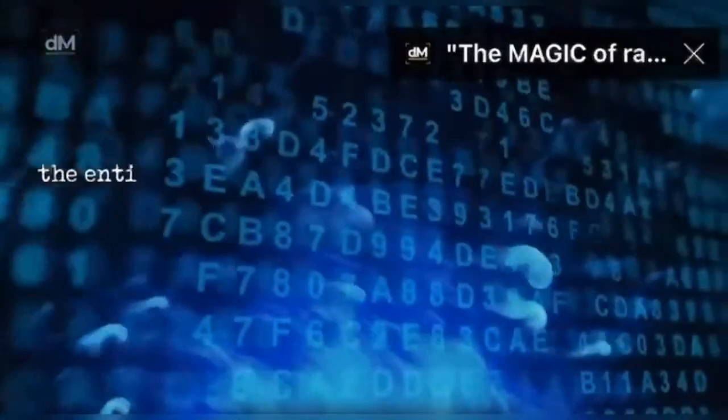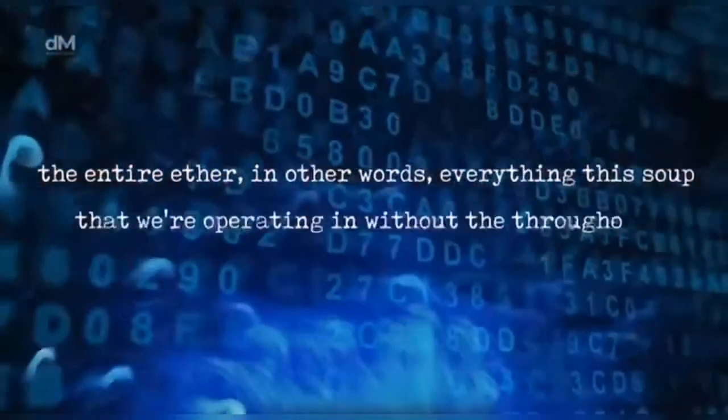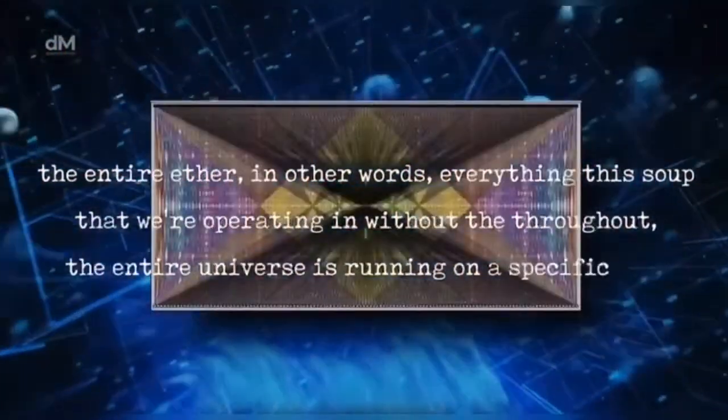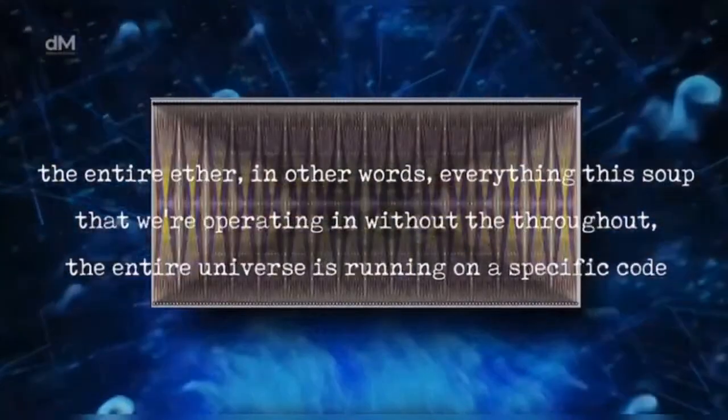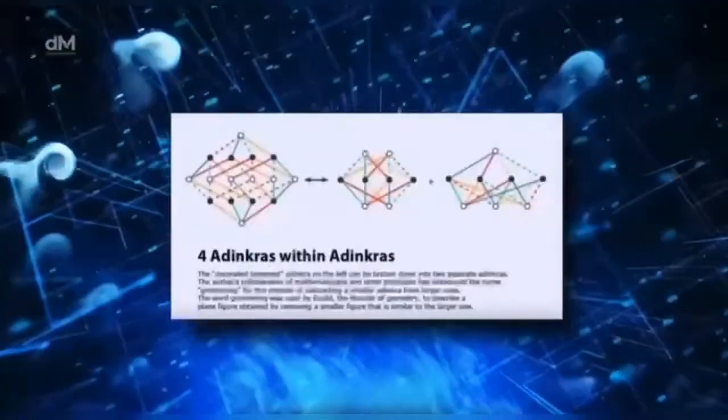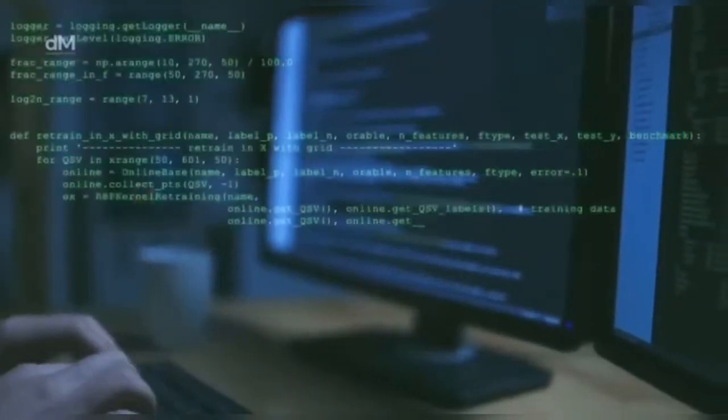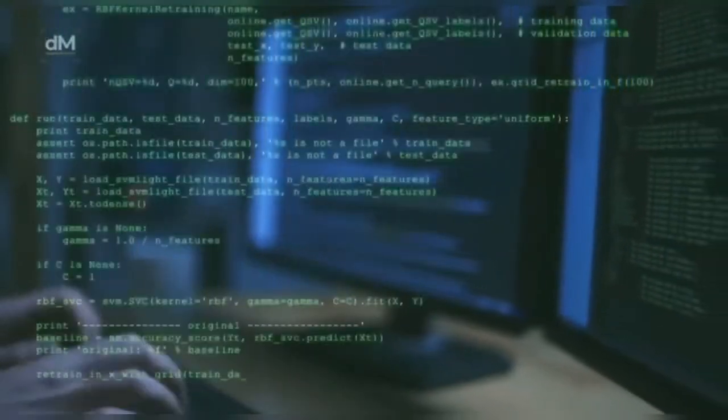And he discovered that the entire ether, in other words, everything that soup we're operating in throughout the entire universe, is running on a specific code. It's called an identical code. It's called error-correcting codes. The same exact kind of codes that run search engines and web browsers. That's what's running the universe.